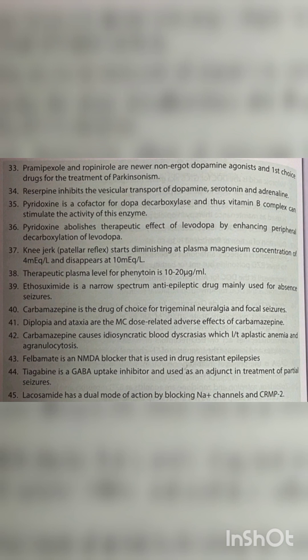The knee jerk (patellar reflex) starts diminishing at a plasma magnesium concentration of 4 mEq/L and disappears at 10 mEq/L. The therapeutic plasma level for phenytoin is 10–20 micrograms per litre. Ethosuximide is a narrow-spectrum anti-epileptic drug mainly used for absence seizures. Carbamazepine is the drug of choice for trigeminal neuralgia and focal seizures. Diplopia and ataxia are the most common dose-related adverse effects of carbamazepine.